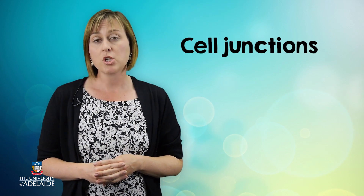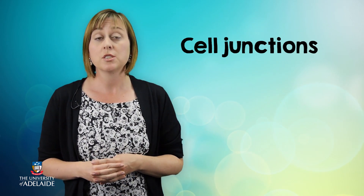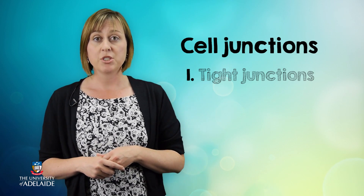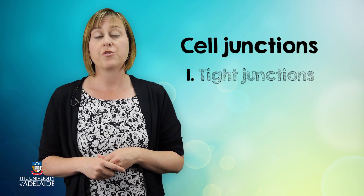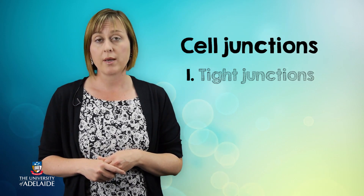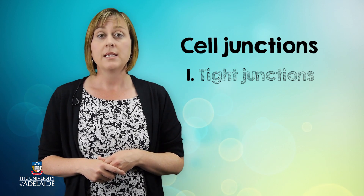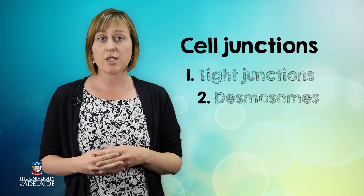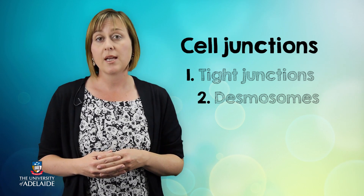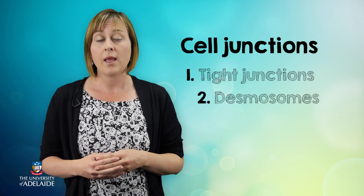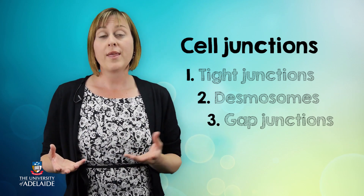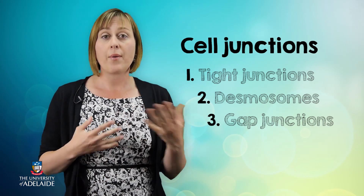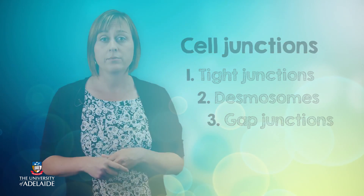There are three main types of cell junctions that we're going to be talking about today. Tight junctions, as the name suggests, which firmly adhere adjacent cells to one another. Desmosomes, which further strengthen these tight junctions and are resistant to stretching and twisting. And gap junctions, which are called communication junctions, allowing adjacent cells to talk to one another.